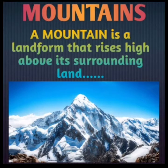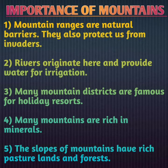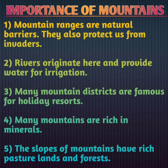Mountain ranges are natural barriers — they protect us from invaders, acting as a boundary. Rivers originate from mountains and provide water for irrigation. The source of rivers is generally found in the mountains.